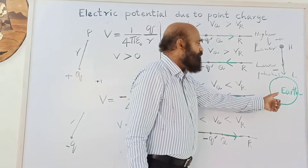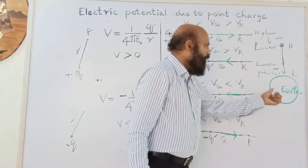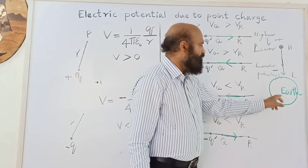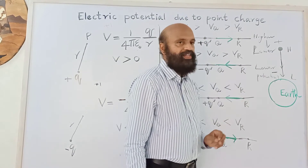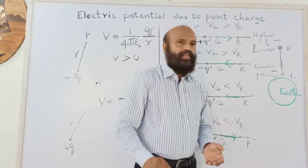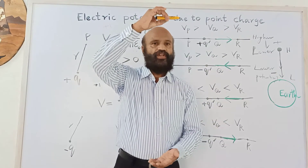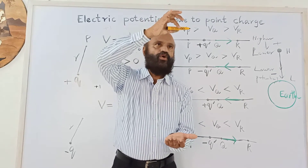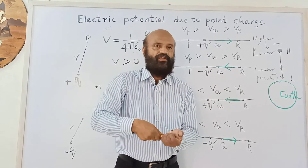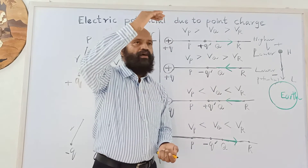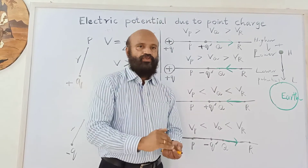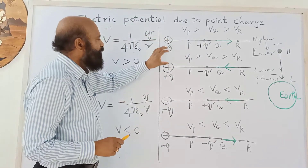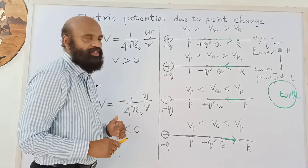Now we will make a comparison between the electric field and the gravitational field. Surrounding a mass there is a gravitational field. In a gravitational field, a body moves from a higher potential to a lower potential — you are very familiar with this. In the case of an electric field, there are different situations because there are two types of charges: positive and negative.